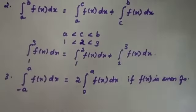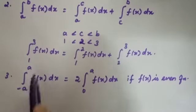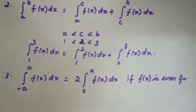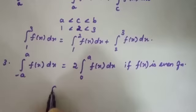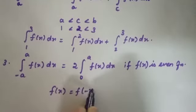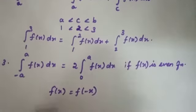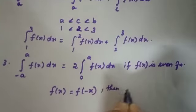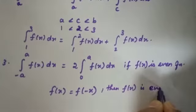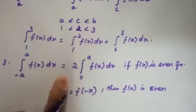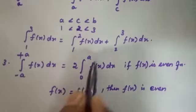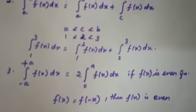For example, with limits minus a to plus a (like minus 2 to plus 2), if f(x) equals f(minus x), then the function is an even function, and the integral from minus a to plus a equals 2 times the integral from 0 to a. Otherwise, you cannot write it this way.